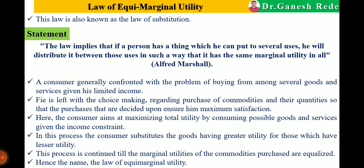This law is known as the law of substitution or the principle of proportionality — always keep these two names in mind. This law is also known as Gossen's second law. The law of diminishing marginal utility was Gossen's first law, and the law of equimarginal utility is Gossen's second law.